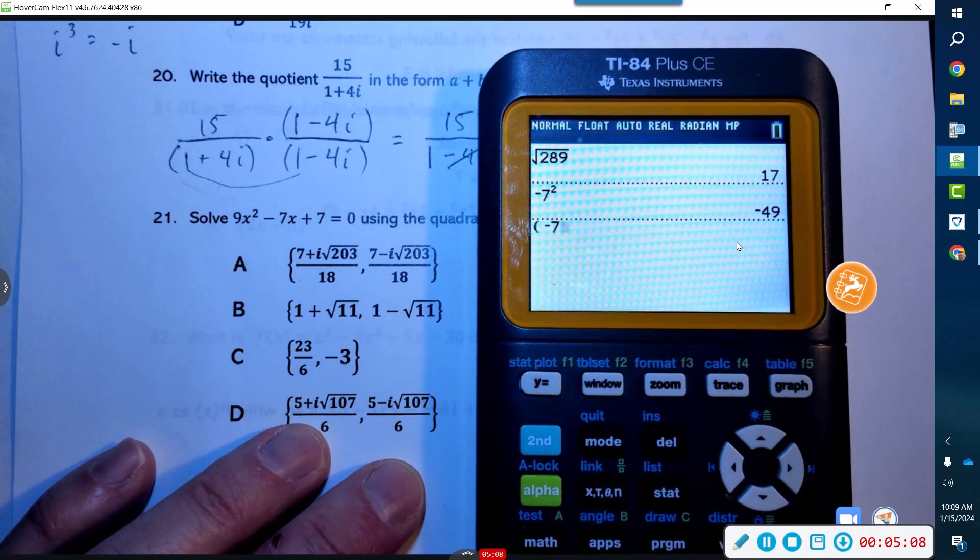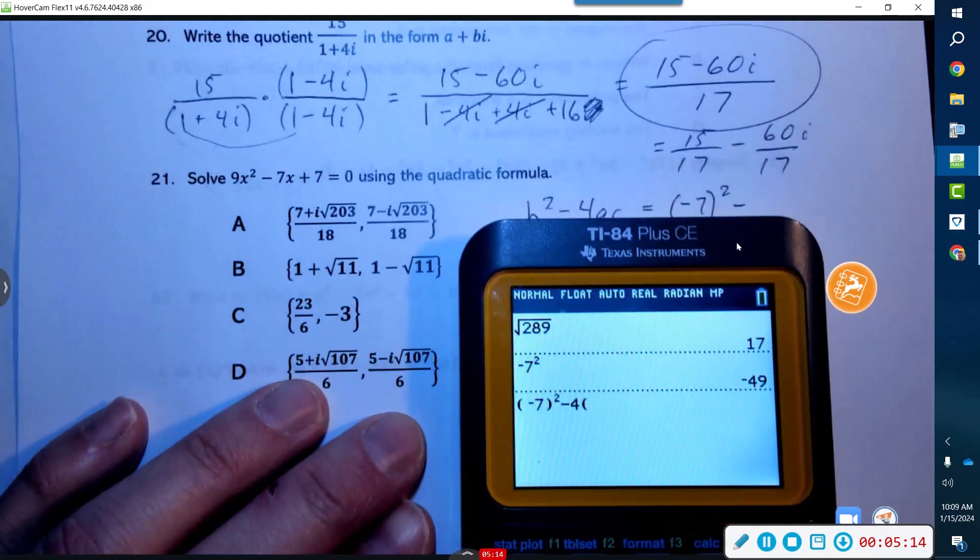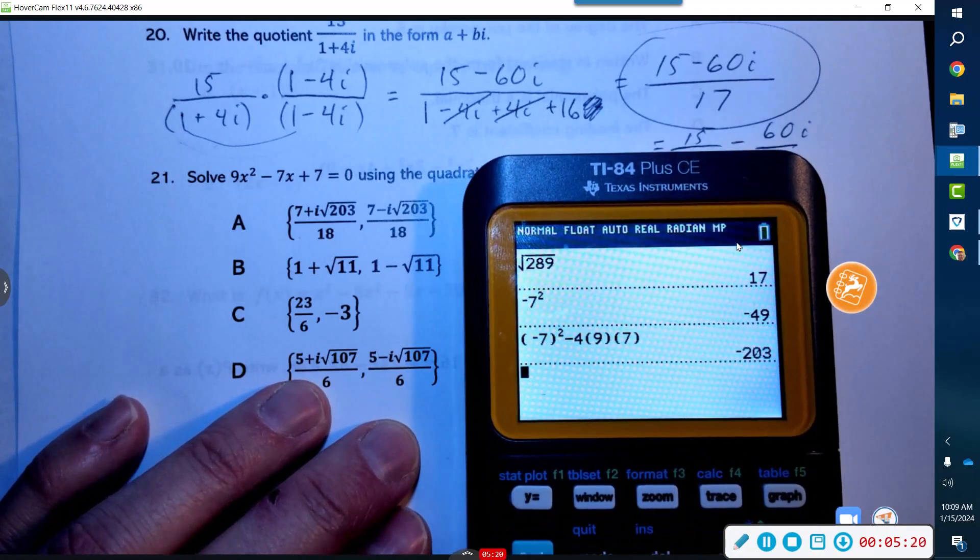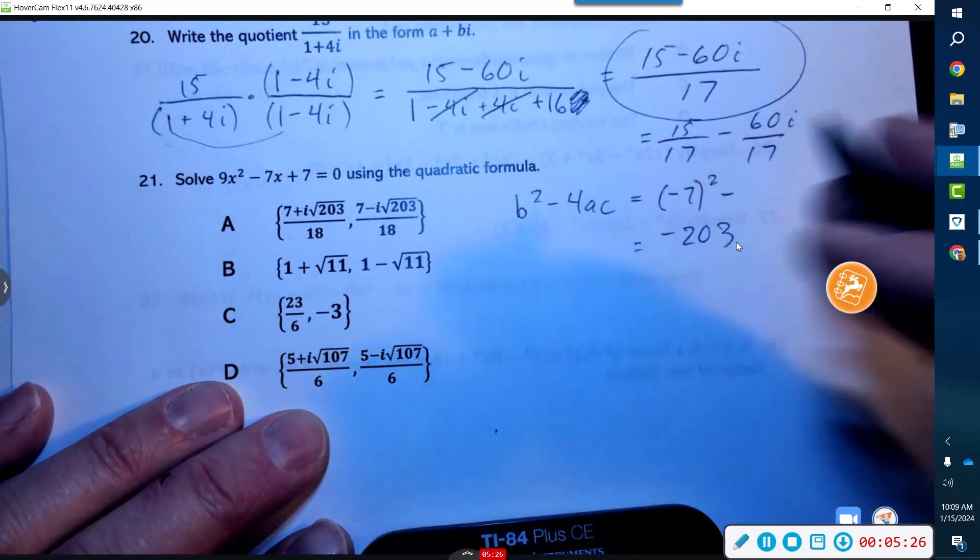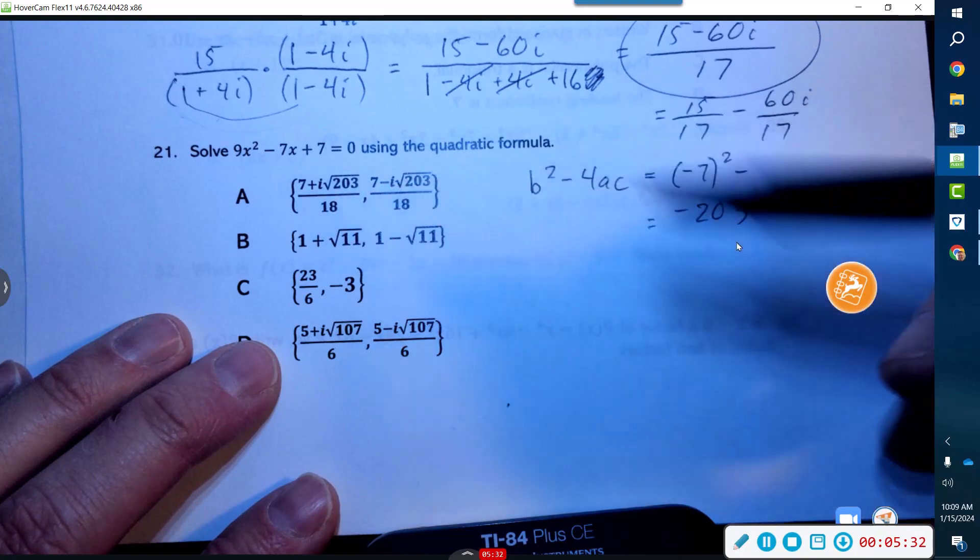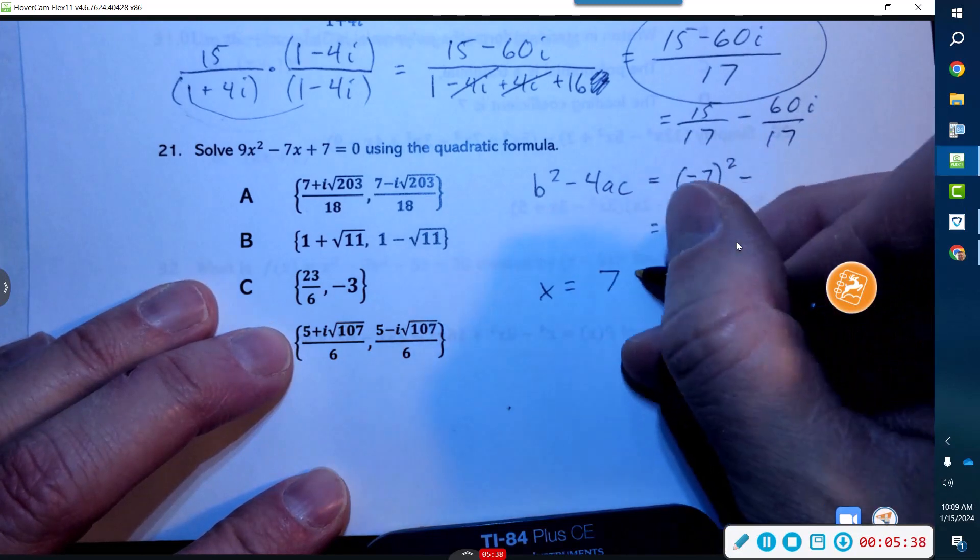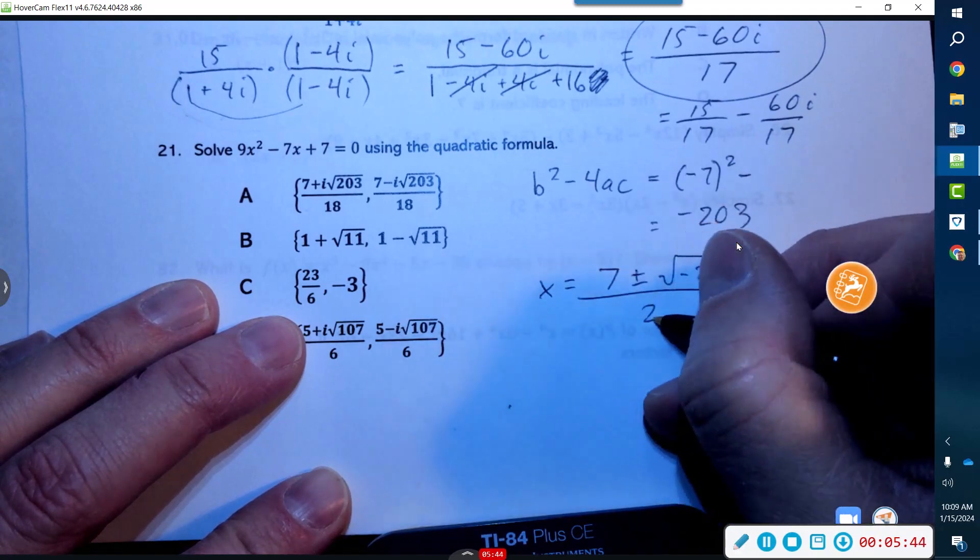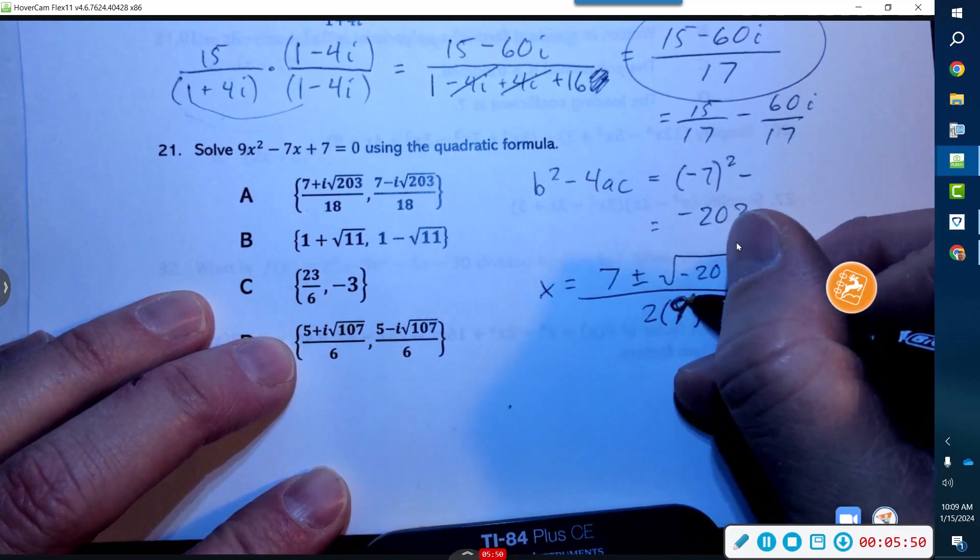That is not what you do. Make sure you put in parentheses when you square, please. Minus 4 times a—a is 9—and c is 7. So let's see what we get: we get −203. I do see a 203 here but it's got an i—that's why, because if we do this: x equals negative b, which is 7, plus or minus the square root of −203, over 2 times a.